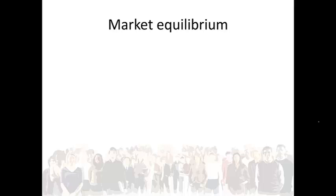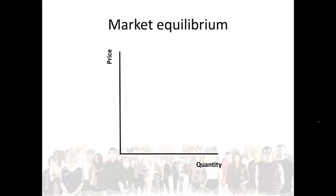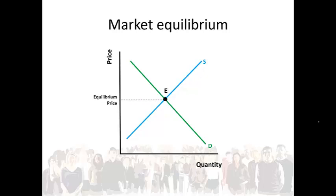Market equilibrium is when the quantity demanded is equal to the quantity supplied. Market equilibrium occurs at the intersection of the demand and the supply curves. The price at which this occurs is called the equilibrium price. At any other price there will be disequilibrium in the form of an excess demand or an excess supply.